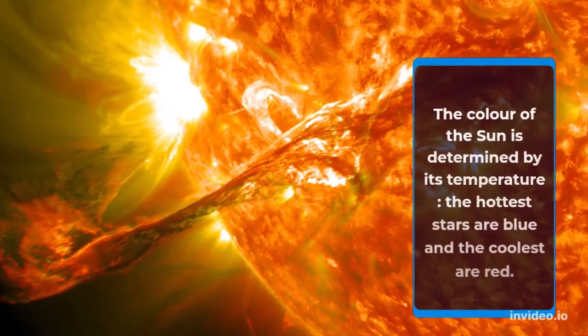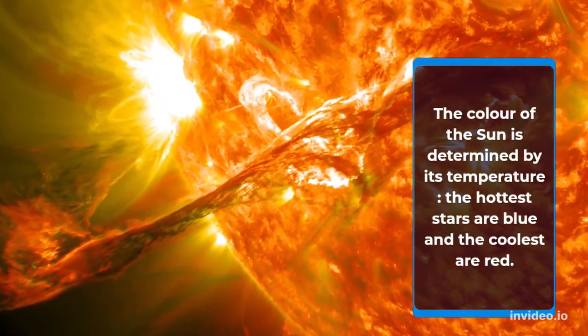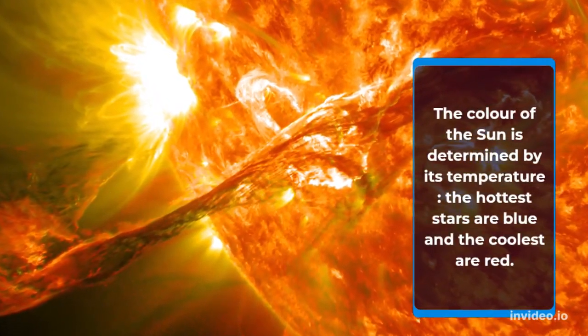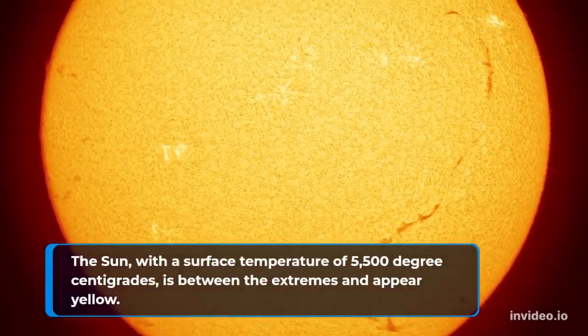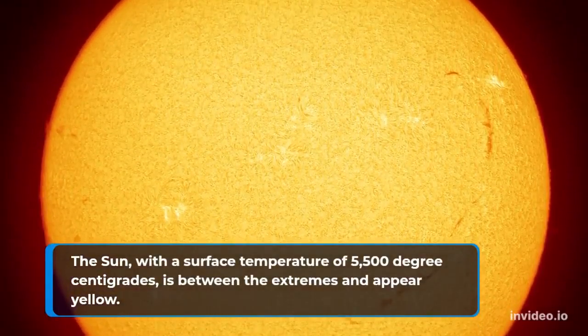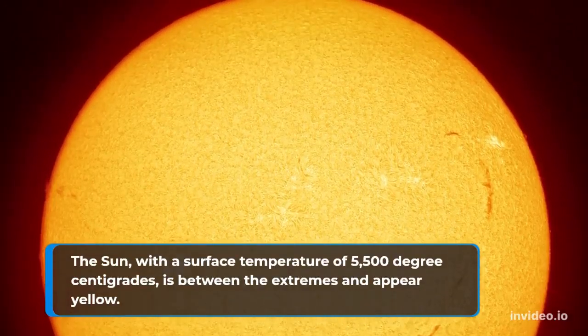The color of a star is determined by its temperature. The hottest stars are blue and the coolest are red. The Sun, with a surface temperature of 5,500 degrees centigrade, is between the extremes and appears yellow.